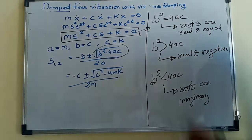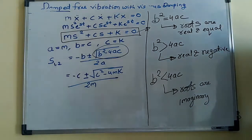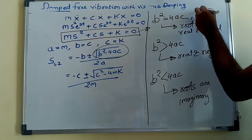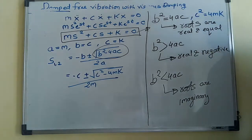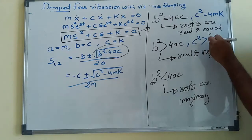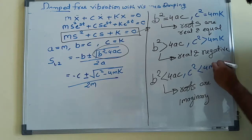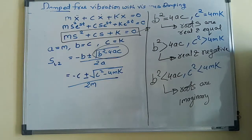So we have three solutions: roots are real and equal, roots are real and negative, and roots are imaginary. Now we can replace b squared equals 4ac with c squared equals 4mk. The second condition becomes c squared greater than 4mk, and the third becomes c squared less than 4mk. These are the three conditions we have to solve in our syllabus.